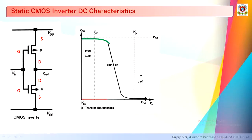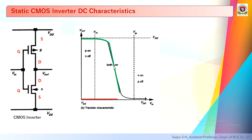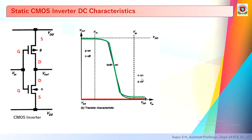From 0 up to VTN (the threshold voltage of the N transistor), when the input voltage is less than VTN, the N transistor is off and the P transistor is on. For low positive voltages, the P transistor remains on. As we increase the input above VTN, the N transistor turns on. Increasing the input further, both transistors are on simultaneously, the voltage drops, and finally the N transistor becomes completely on while the P transistor turns completely off.